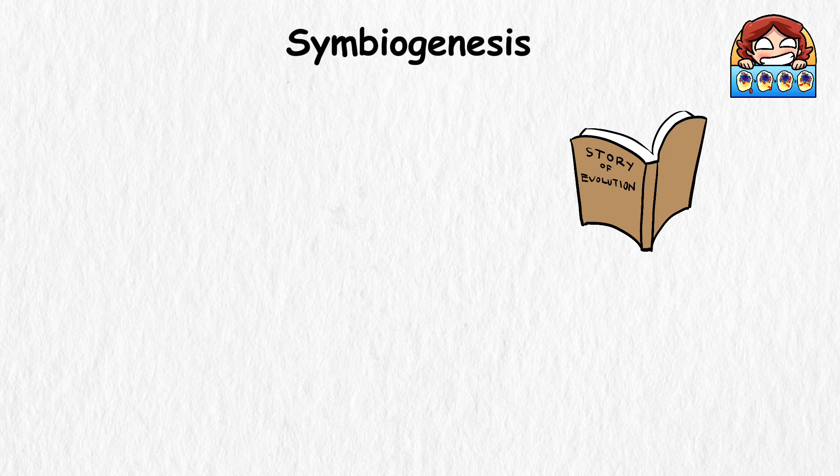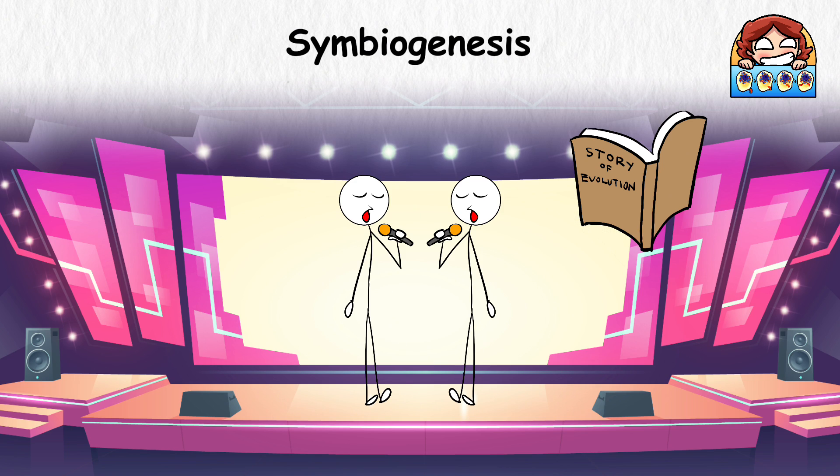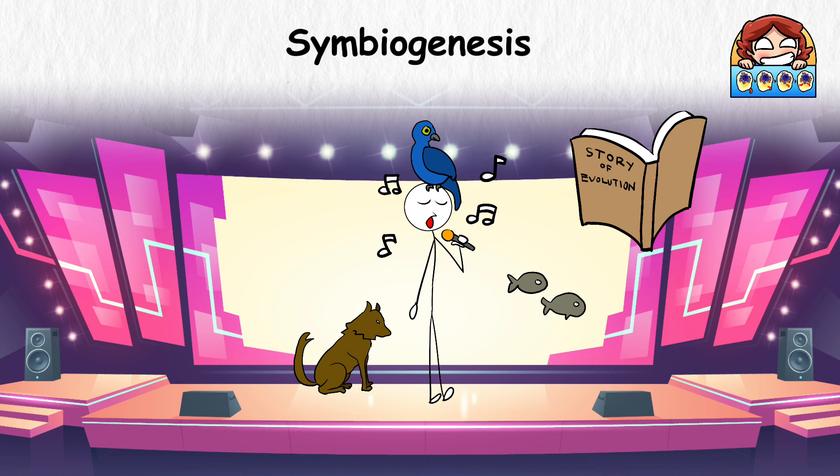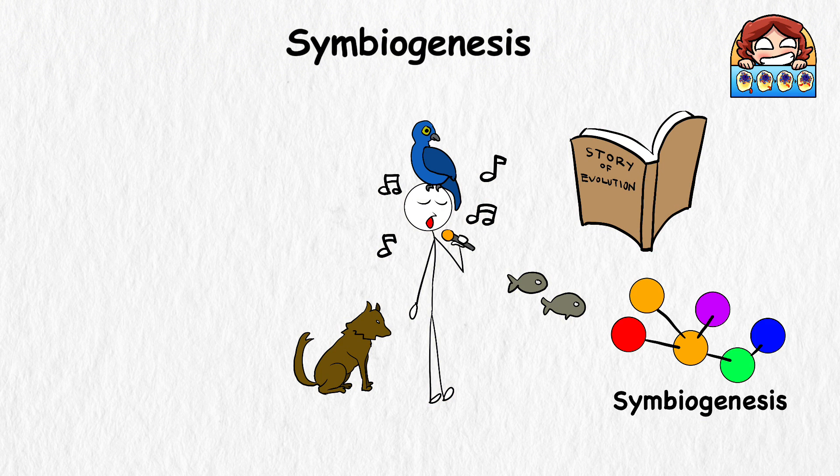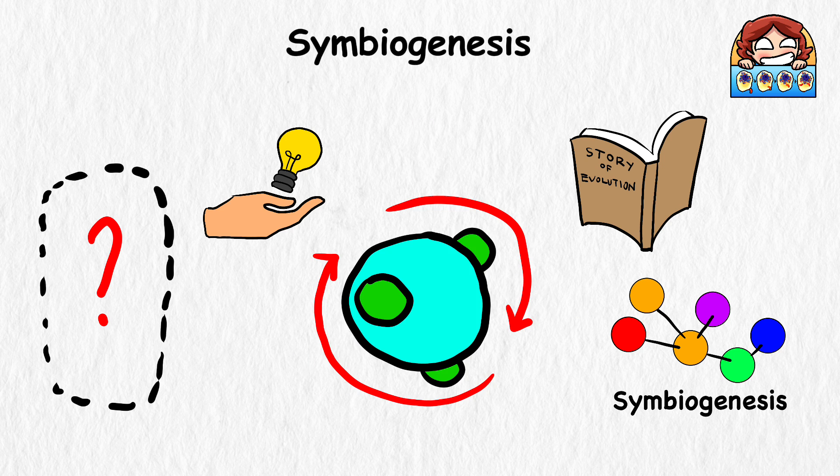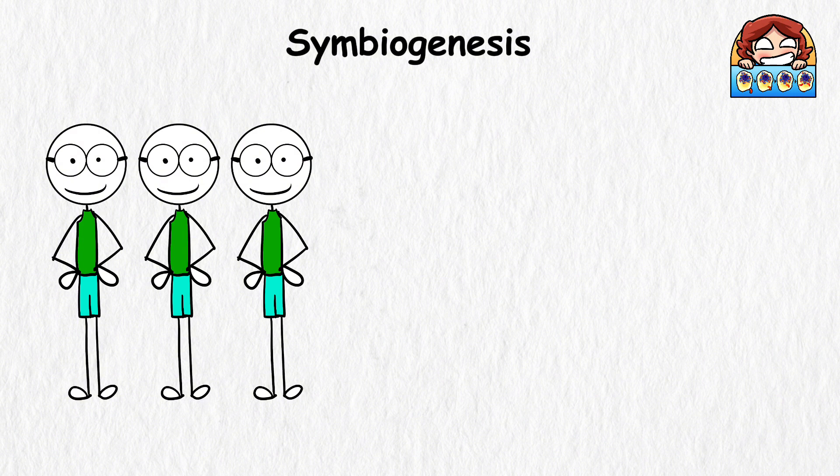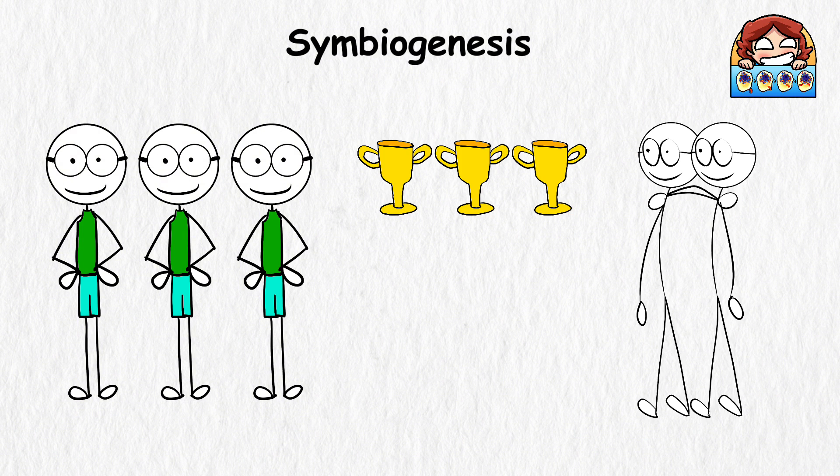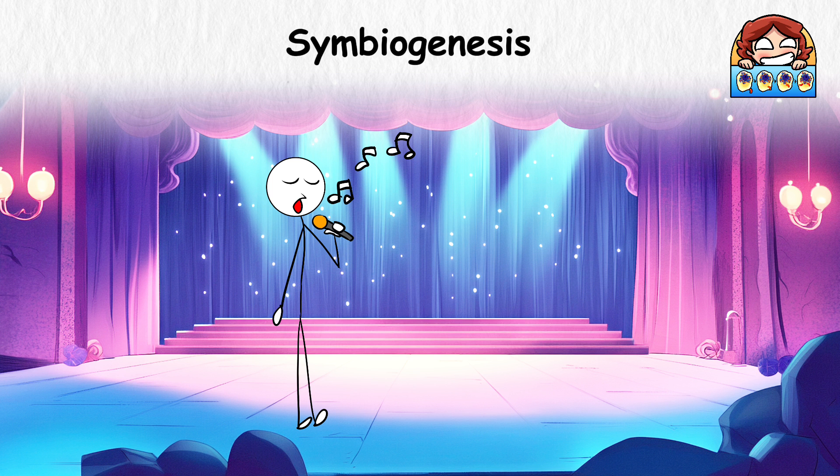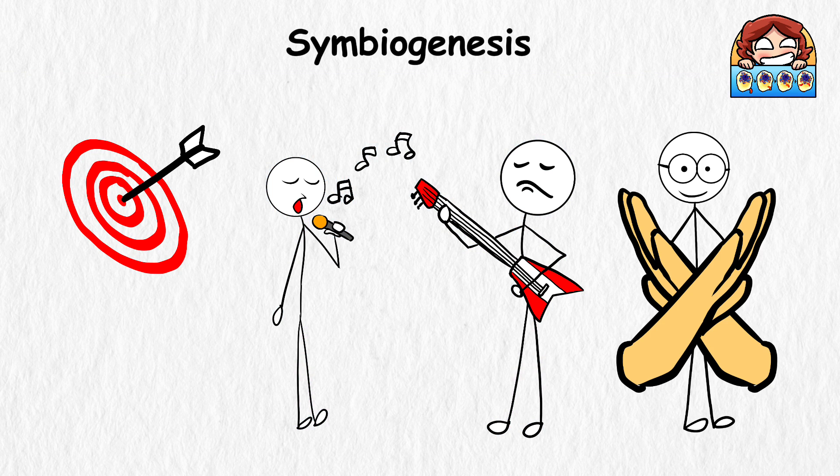Symbiogenesis. The story of evolution is not a solo performance, but an epic duet or even a jam session between different species. That's basically what symbiogenesis is about. This theory proposes that new species can arise from merging different organisms through symbiosis, which is when two organisms live closely together and benefit from each other. Think of it like a biological tag team where everyone wins. Imagine you and your friend getting together to form a band because you know that you have an awesome singing voice and your friend has great guitar skills. Together, you achieve something neither of you could have done alone.